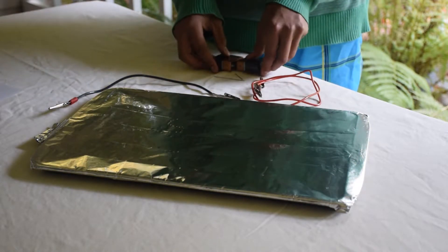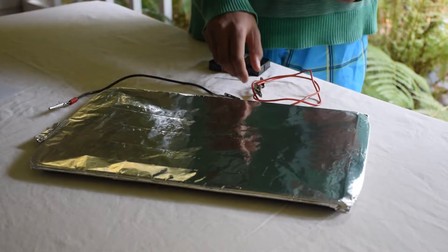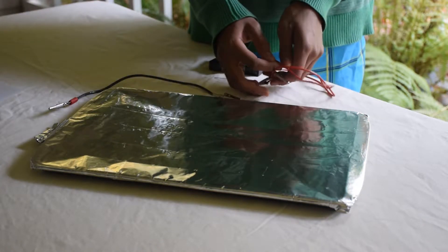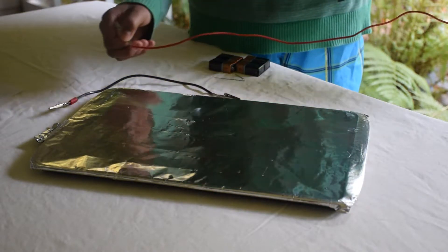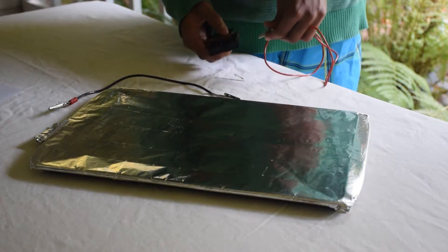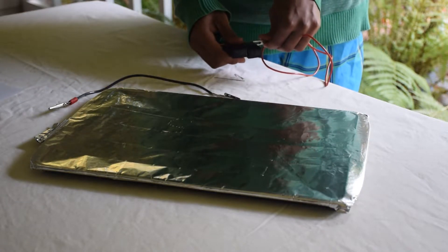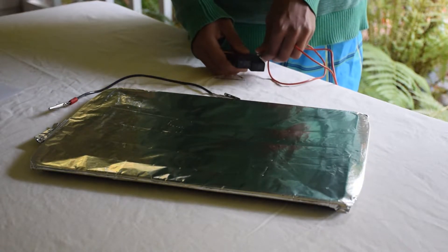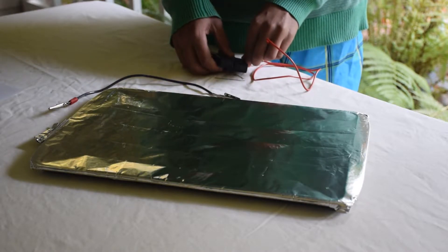So once you've done that, you'll want to set that down, and you'll want to take your first alligator wire, stretch it out, and connect it to the positive side, or negative side. Each side of the circuit works, and you want to connect it there.